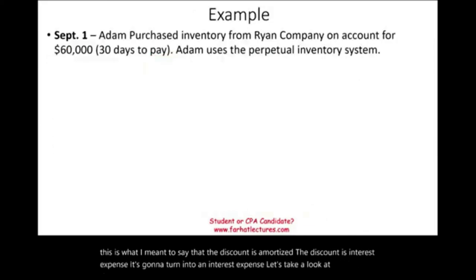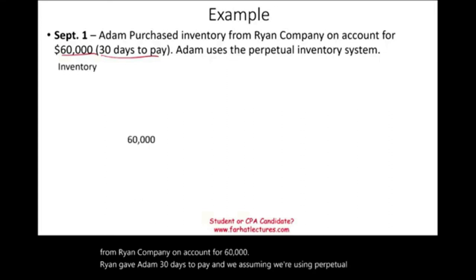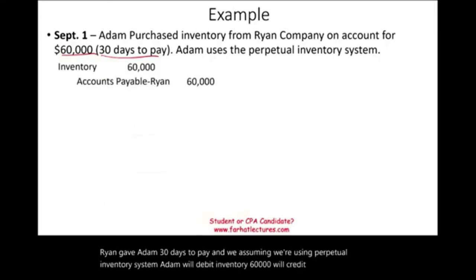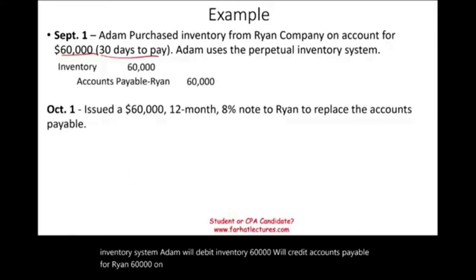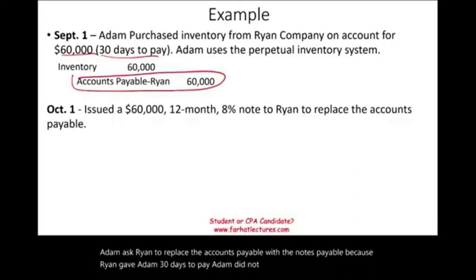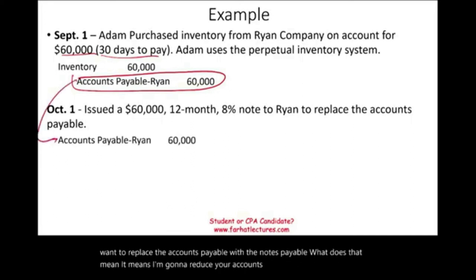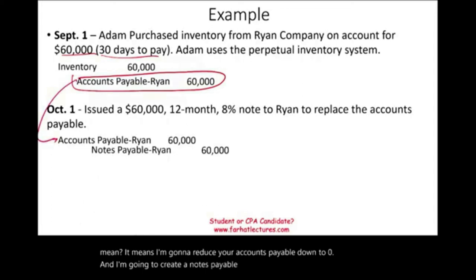Let's look at another example where notes payable are created. Adam purchased inventory from Ryan Company on account for $60,000. Ryan gave Adam 30 days to pay, using a perpetual inventory system. Adam debits inventory $60,000 and credits accounts payable $60,000. On October 1st, one month later, Adam doesn't have the money, so he asks Ryan to replace the accounts payable with a notes payable. Ryan agrees — accounts payable goes to zero and a notes payable of $60,000 is created. This is a form of refinancing.